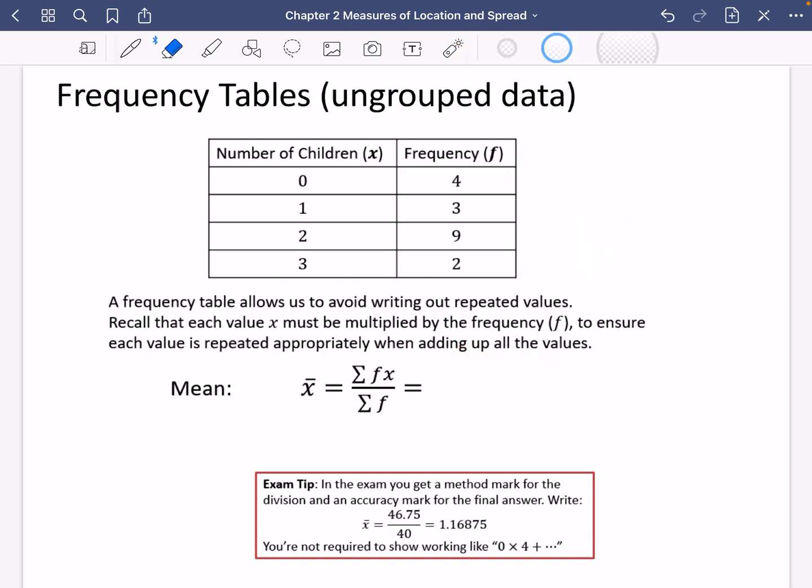So you'll probably remember this from GCSE, that if you were going to do this, you would multiply all of these together, so that you get zero, three, 18, and six to find out how many children there are in total.